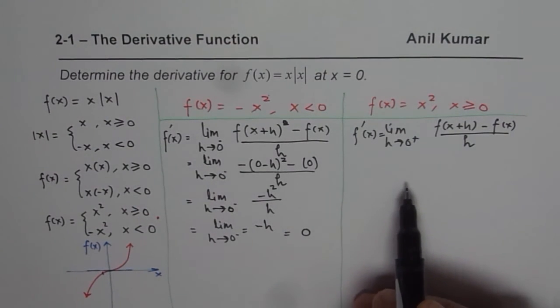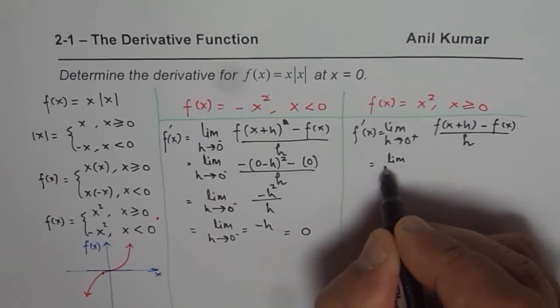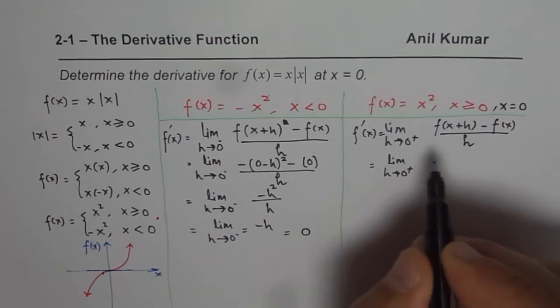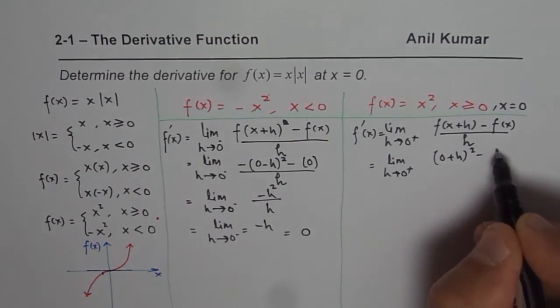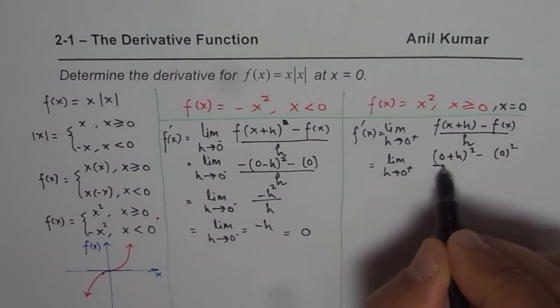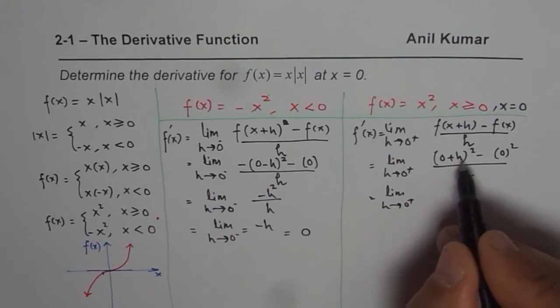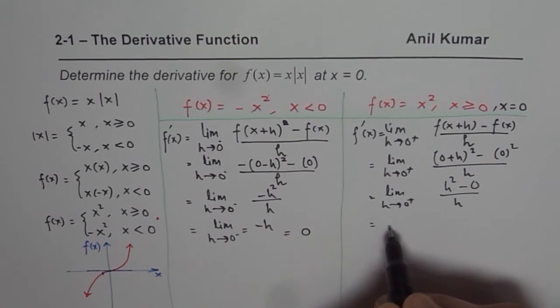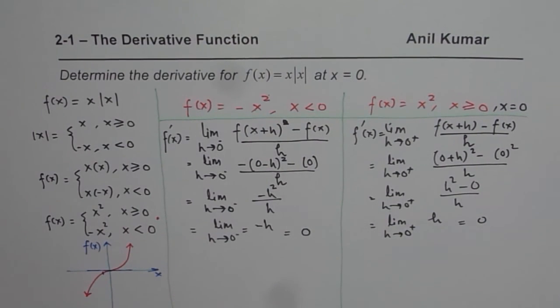Let's do the same calculations when we are approaching h from the right side. So it looks like it should be limit h approaches 0 from positive side, x is 0 for us. We are writing x equals 0. So (0+h)² - 0² divided by h. And that is limit h approaches 0, and that is clearly (h² - 0)/h. So we can cancel and rewrite this as limit h approaches 0, which is h. Substituting h equals 0, we get 0. Do you see that?